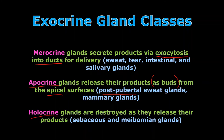Holocrine — and the way to remember this, think 'whole' — the whole thing is destroyed. The holocrine gland is completely obliterated as it releases its products. It essentially explodes its products out and we have to make a new cell or gland to make more product. Sebaceous glands — or oil glands — are a post-pubertal type of gland. And meibomian glands are special oil glands found in the eyelids and surrounding structures of the eye, secreting an oily substance across the eye surface.